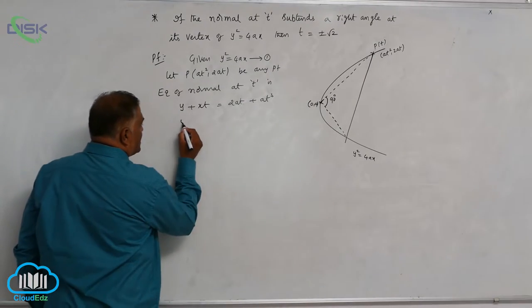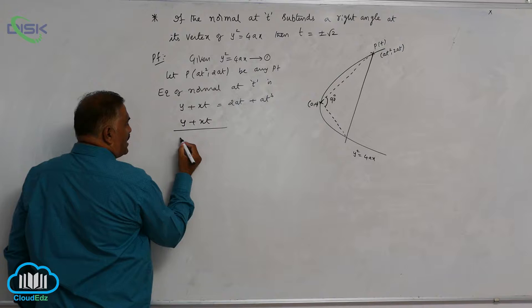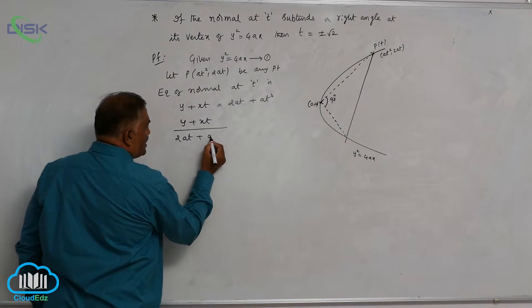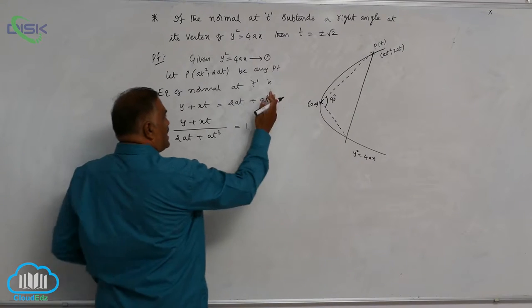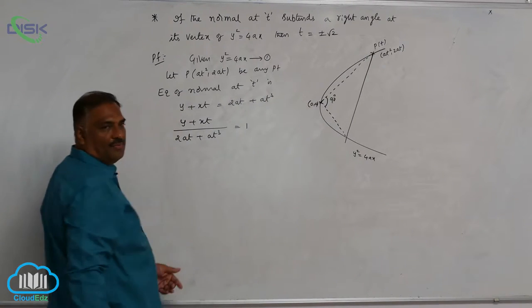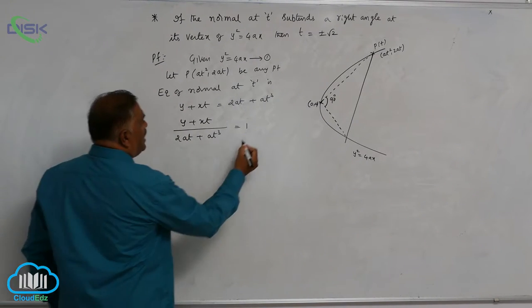So, using this, y plus xt, you can rewrite it as 2at plus at cubed is equal to 1. That means, this entire part into 1, you can write. Call it equation number 2.